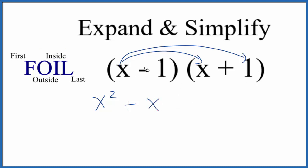Inside, we have negative 1 times x, so that's negative x. And then that last term, negative 1 times the positive 1, that gives us a negative 1.